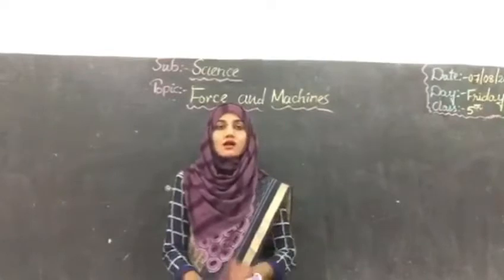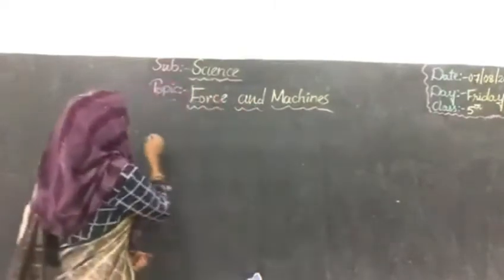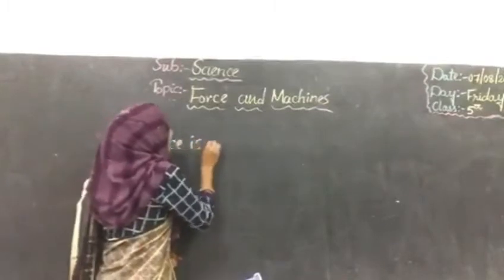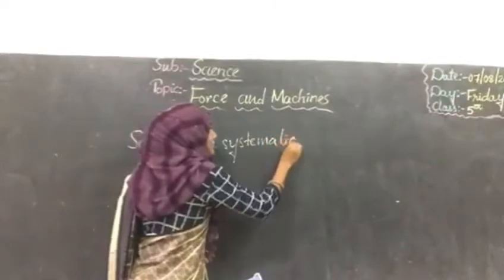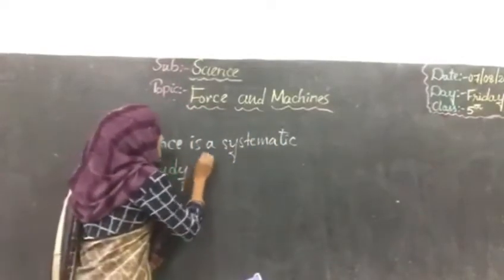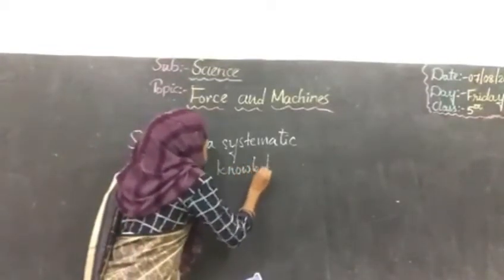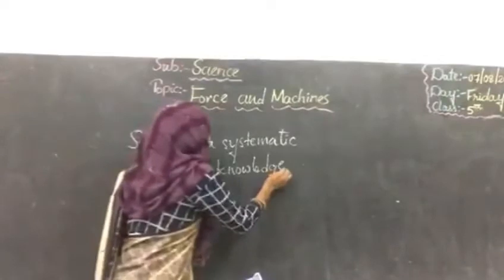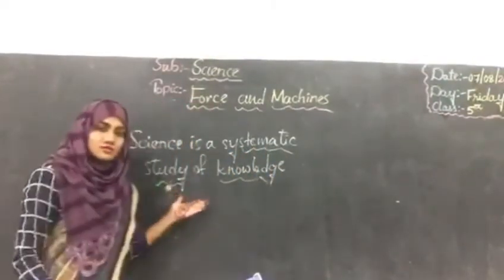can be defined as a systematic study of knowledge. Science is a systematic study of knowledge.